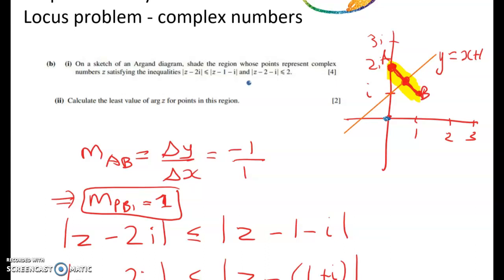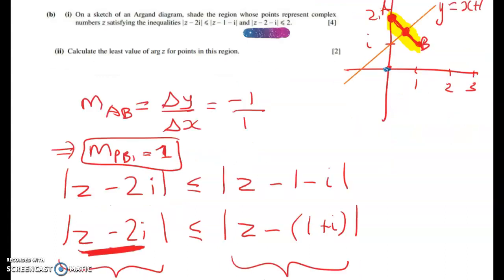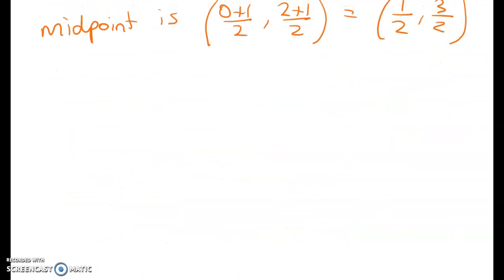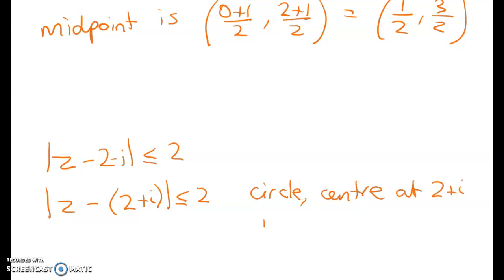Next, we're going to work with this one here. So z minus 2 minus i has to be less than or equal to 2. Rewriting this, we get z minus 2 plus i is less than or equal to 2. So this is the locus of a circle with a center at 2 plus i and a radius of 2.